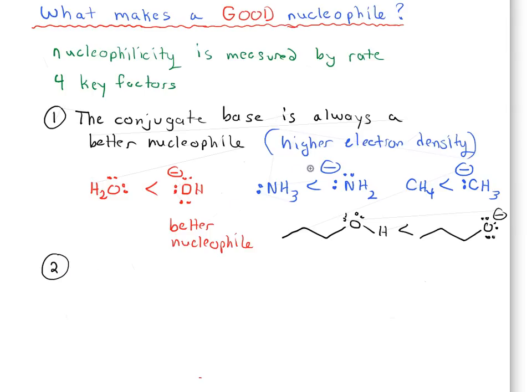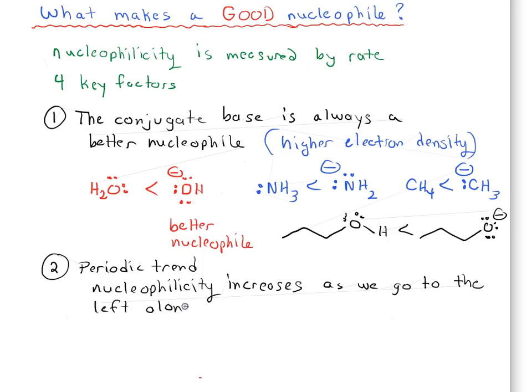So the second main factor, not only are we talking about electron density, but we're going to talk about a periodic trend. So here's the number one periodic trend. Nucleophilicity increases as we go to the left along the periodic table. So it's actually the opposite of electronegativity.